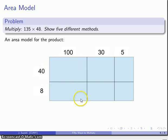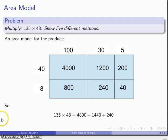That's 100 by 40 is 4000. And 100 by 8, 800 and so on. So, my product is going to be the sum. 4,800, 1,440, 240. And I can add those together to get 6,480 as my product.